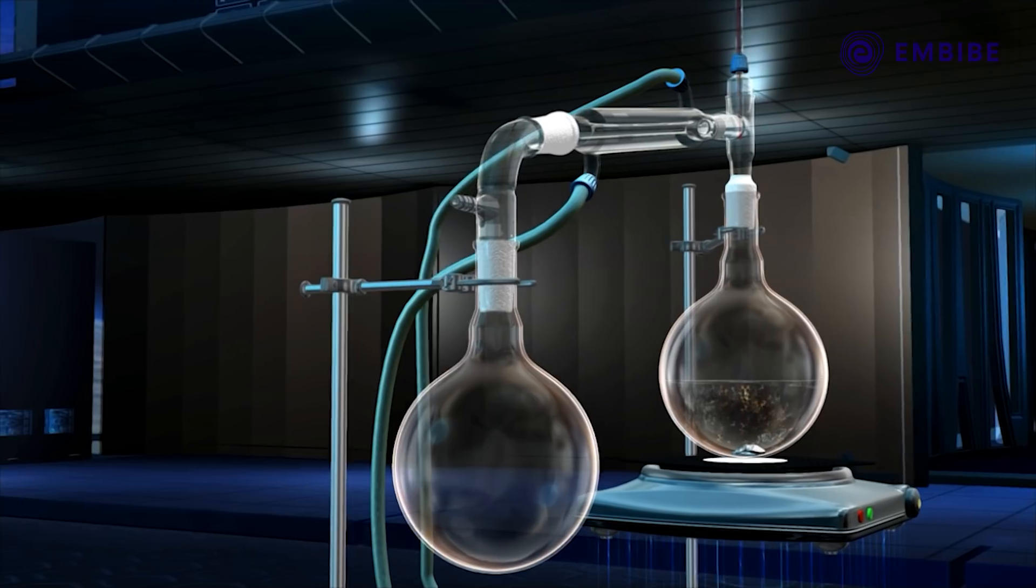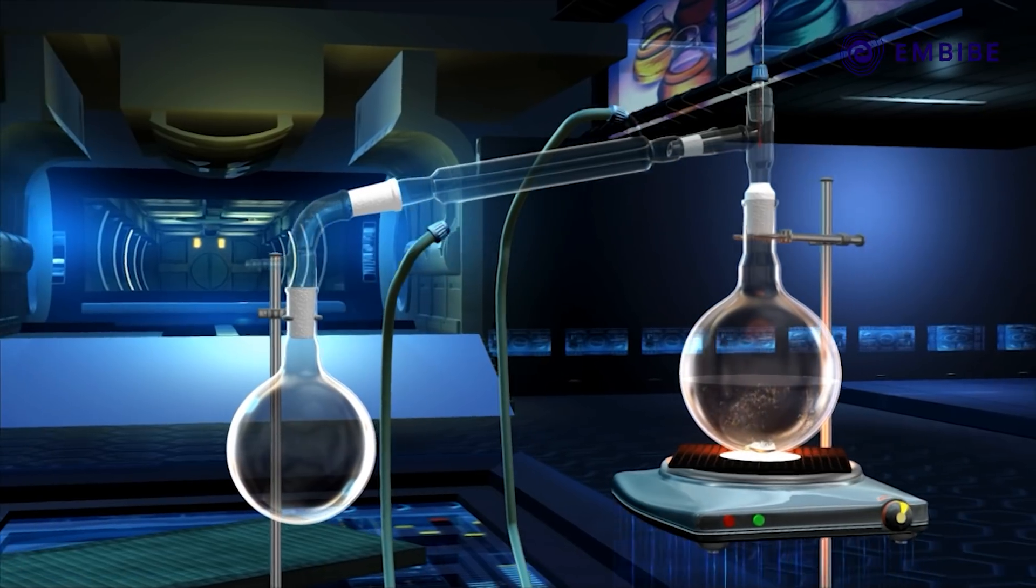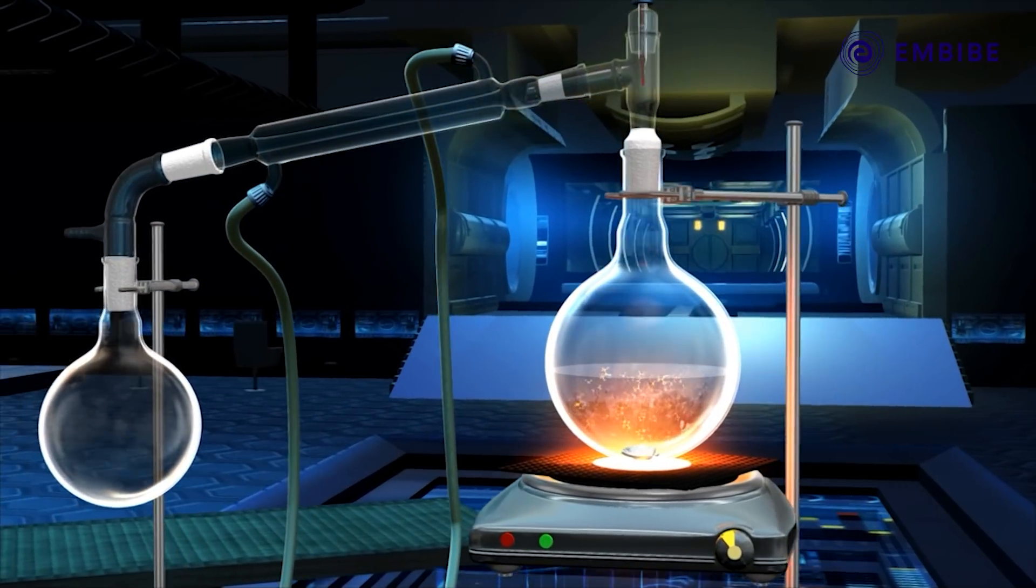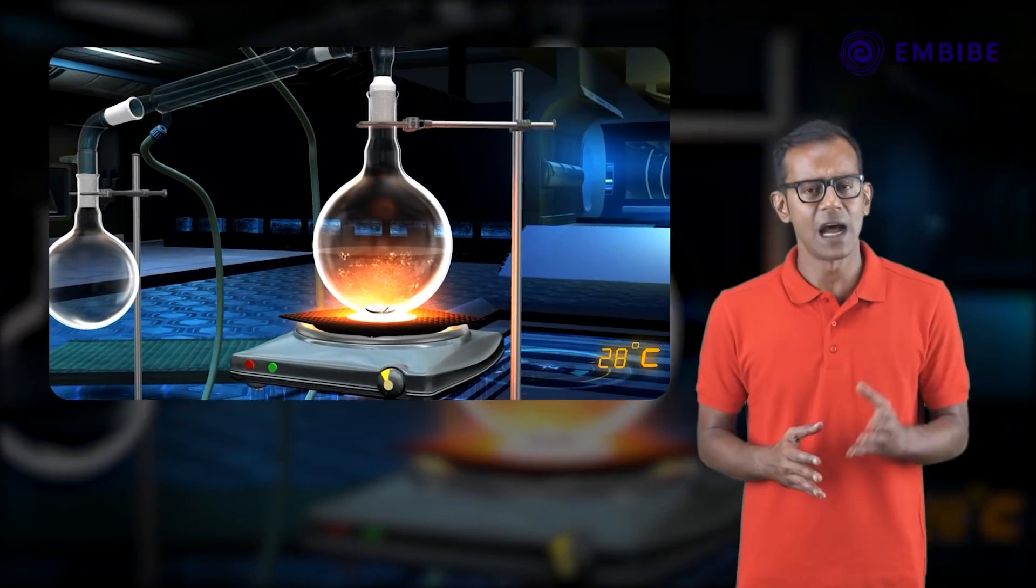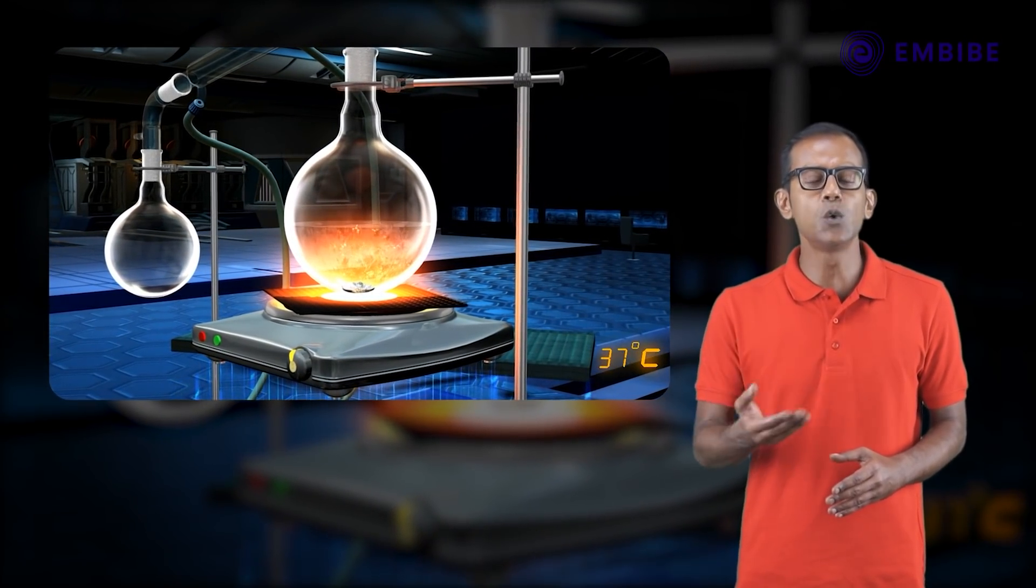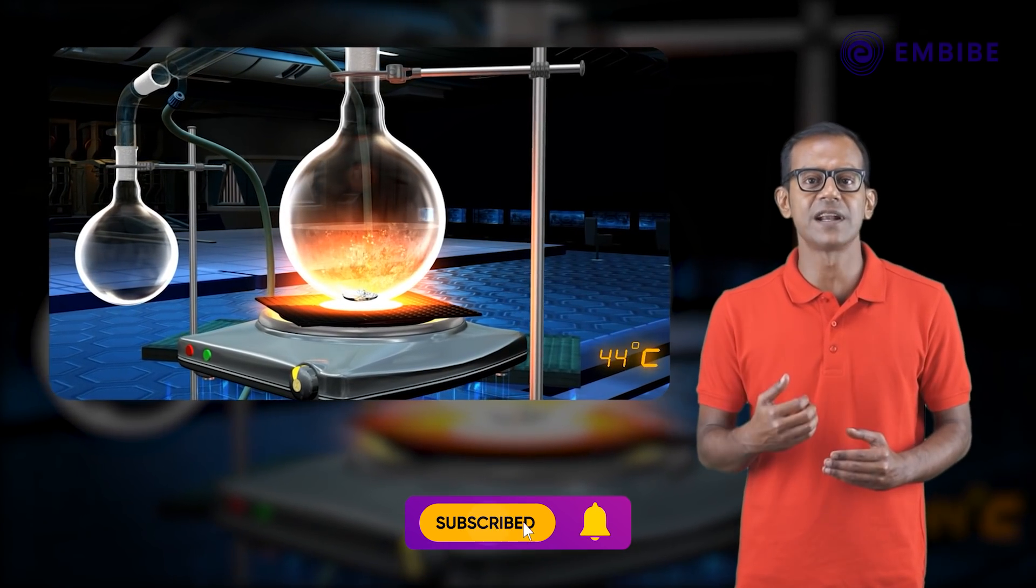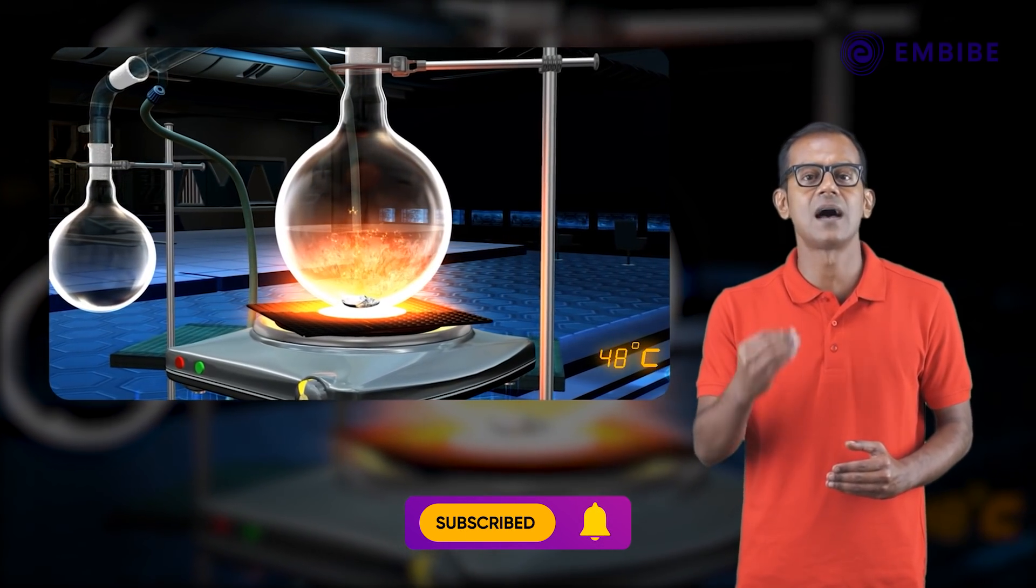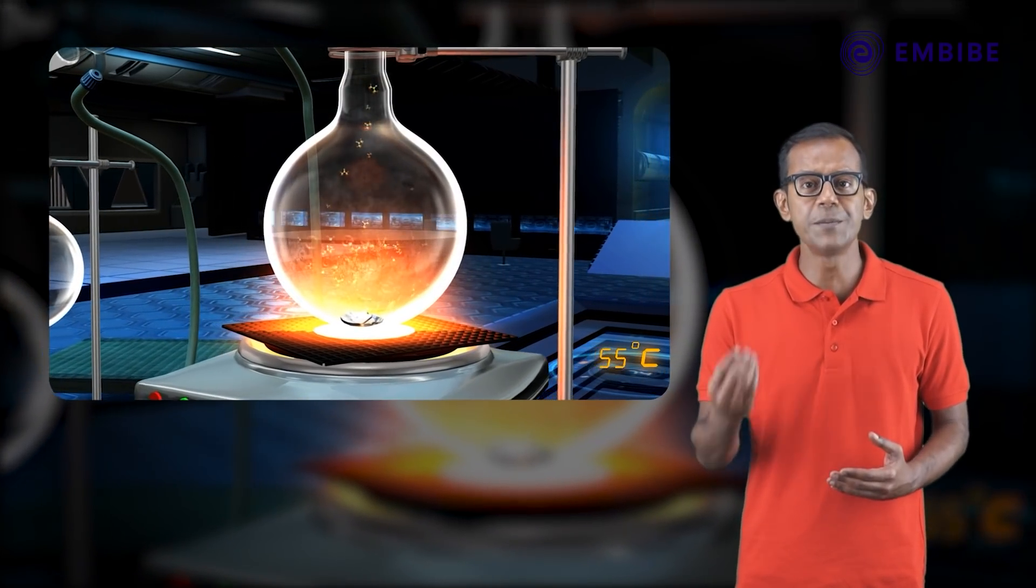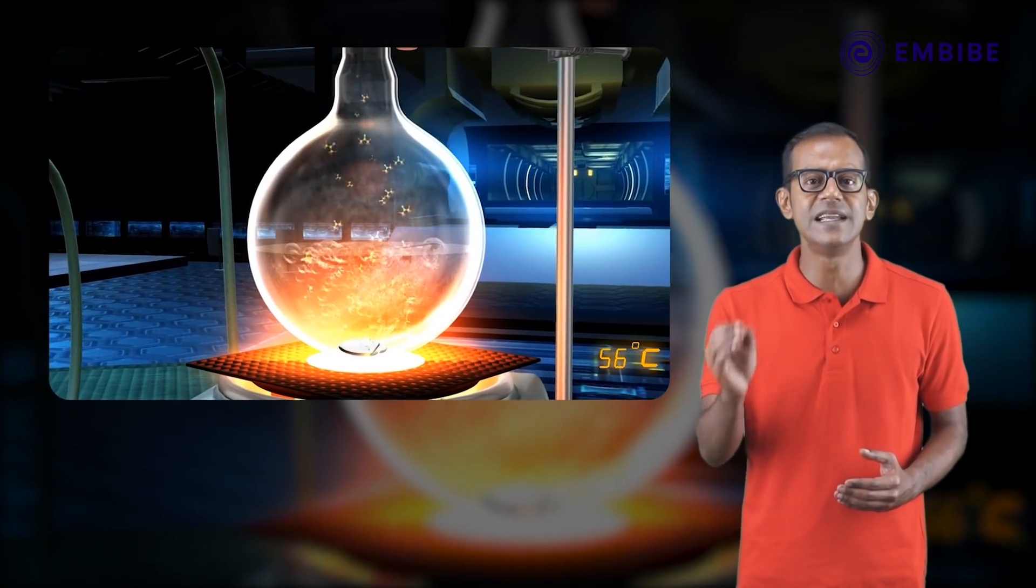Now that we have assembled the apparatus for simple distillation, let us start the process. Turn on the hot plate. The mixture of the two miscible liquids gets heated and the thermometer records a rise in temperature. After some time, acetone begins to boil and changes into its vapors while water remains unaffected as it has a higher boiling point.